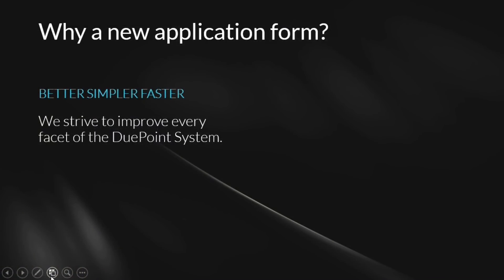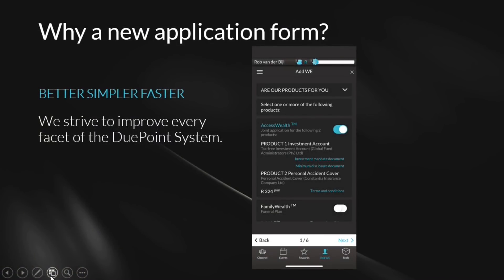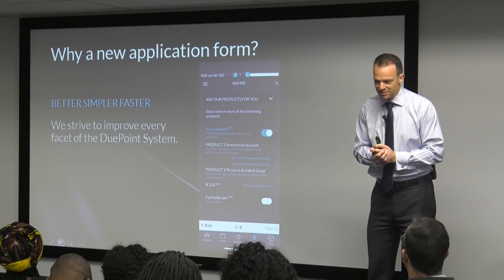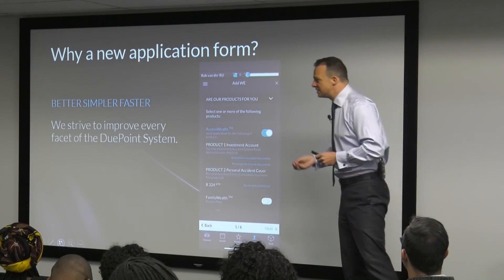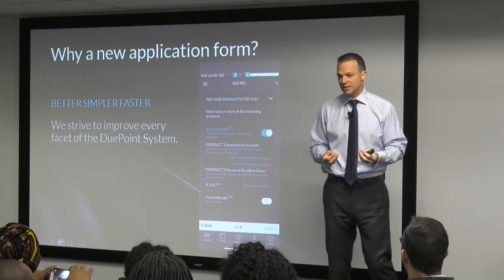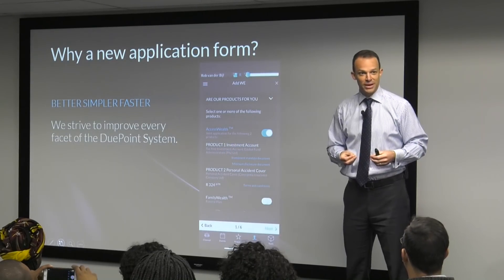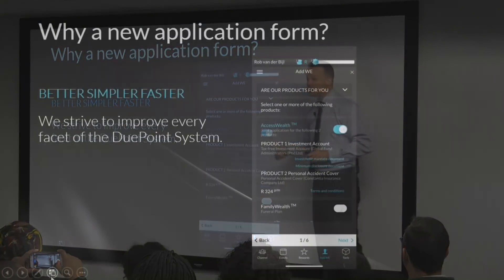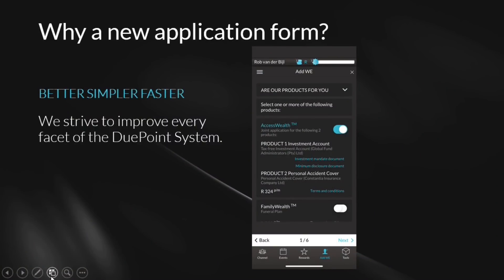New application form. Remember the current application form — that's what it looks like. Why do we have a new application form? We are always trying to evolve the DuPont system to be better, simpler, faster. So let's take a look at a comparison because I'm going to show you a very quick comparison and I'm going to hope that you can appreciate the difference in what we've done.